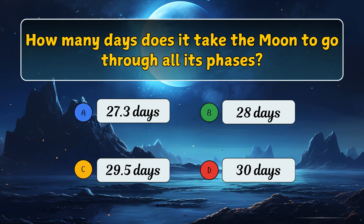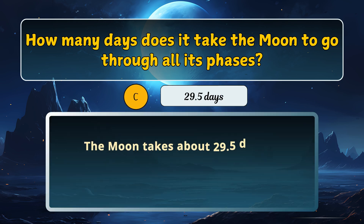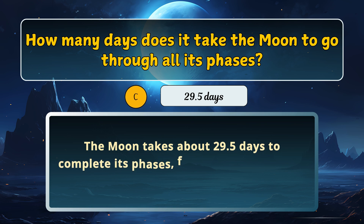How many days does it take the moon to go through all its phases? Here is the answer: 29.5 days.